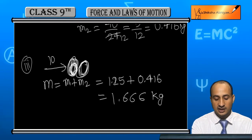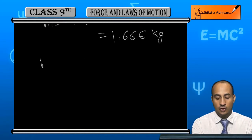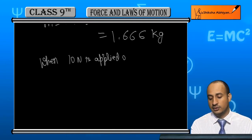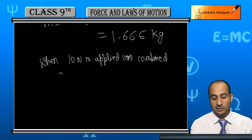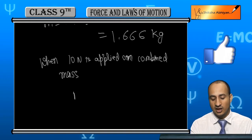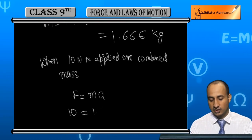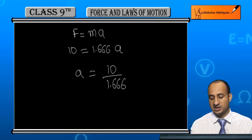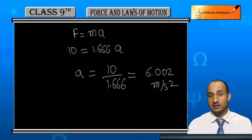When 10 newton force is applied on the combined mass, the acceleration can be found using F equals m times a. Here force is 10 newton, mass is 1.666 kg. So acceleration equals 10 divided by 1.666, which gives approximately 6.002 meter per second square.